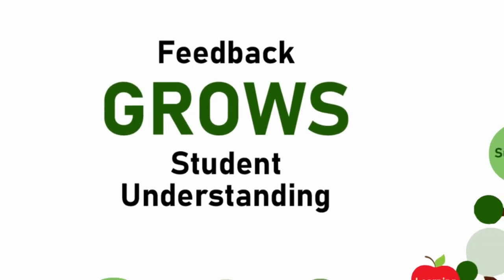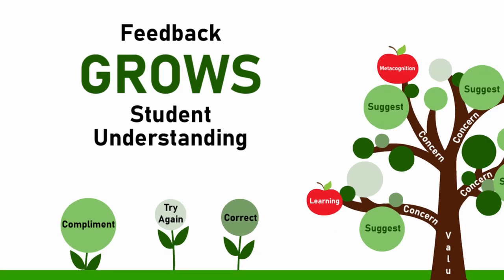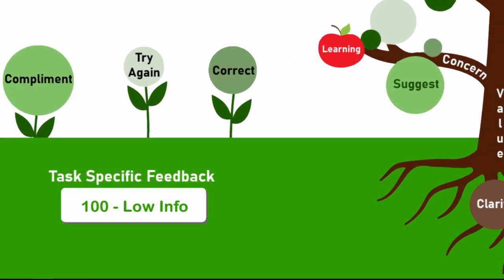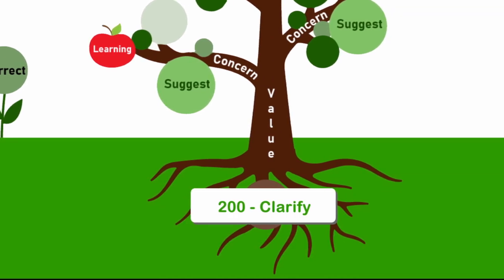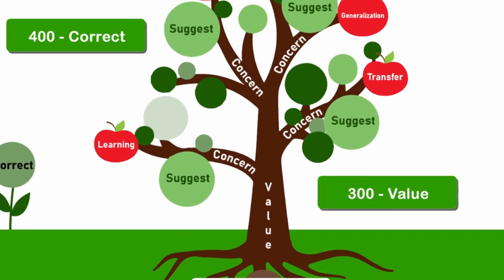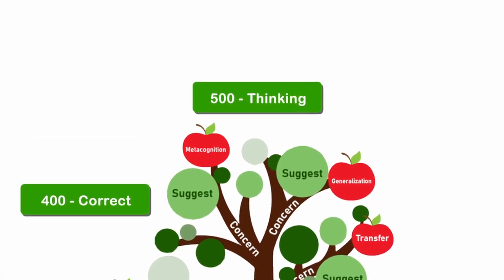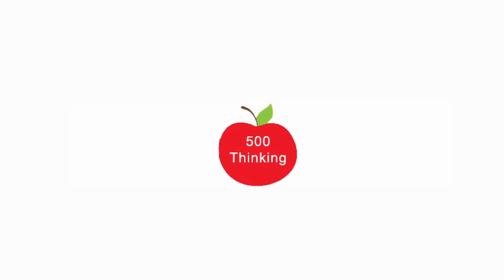The Agile Teacher Lab has developed a visualization for effective feedback, called the Feedback Tree. Effective feedback begins at the roots of the tree by recognizing and valuing the student perspective, moving on to the branches with leaves that offer corrections to improve student responses, and ending with an apple — the fruit of learning that advances student metacognition.